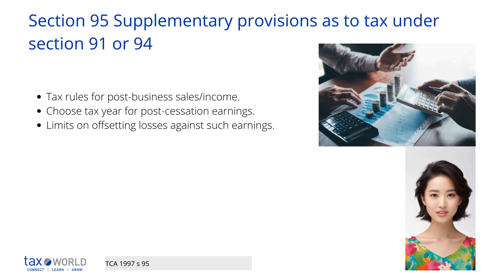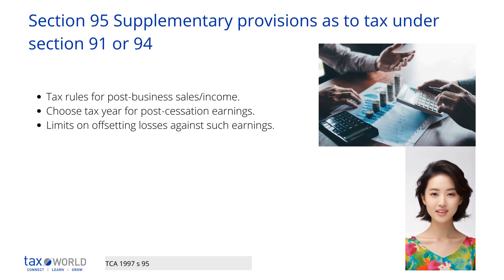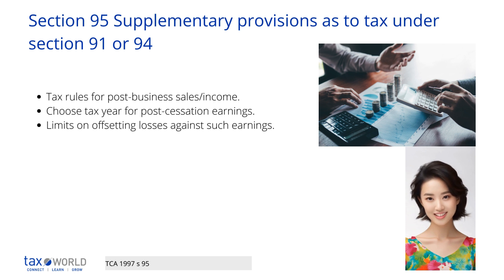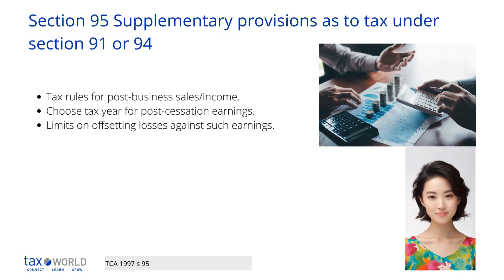You can't use the same losses or allowances more than once. Any amount received for work that was in progress when the business ceased must be included as money received after cessation. Normally this is handled by Section 90, but this applies if you use cash accounting and did not account for work in progress.